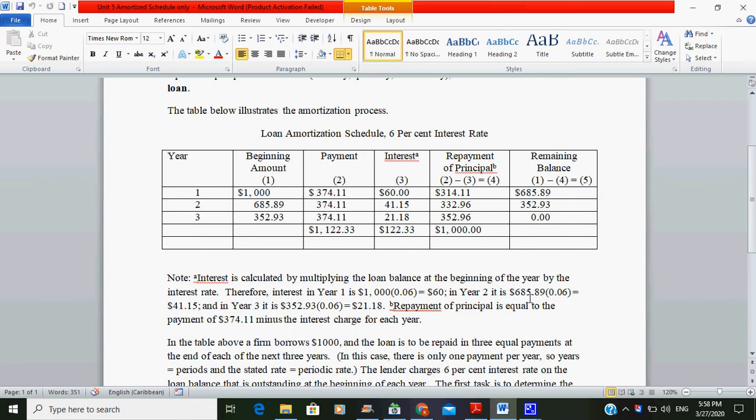In year two, it is 685.89. But before we go there, you'd have gotten this. To get the 214.11, it will be payment minus interest. So repayment of principal equals payment of 374, which is the payment minus the interest charge for each year. And that will give you 214.11. To get the remaining balance, it will be beginning amount minus repayment of principal. And that will give you 685.89.